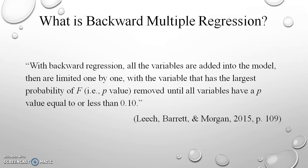Our authors provide this definition of backward multiple regression: with backward regression, all the variables are added into the model, then are eliminated one by one, with the variable that has the largest probability of F, or the p-value, removed until all variables have a p-value equal to or less than 0.1.